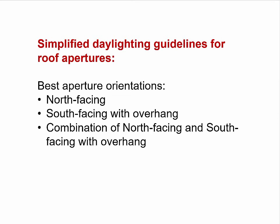We're going to show videos that talk at length about solar behavior, daylight behavior, and various excellent examples of daylighting design. From that we'll come up with simplified daylighting guidelines for roof aperture systems. The best orientations are either north-facing glass — where we can pair photovoltaics on the south-sloping surface to capture beam sunlight — or south-facing glass with an overhang and diffusing elements to intercept beam sunlight and scatter it around the space to minimize glare. The combination of north-facing and south-facing glass with an overhang also works very well.